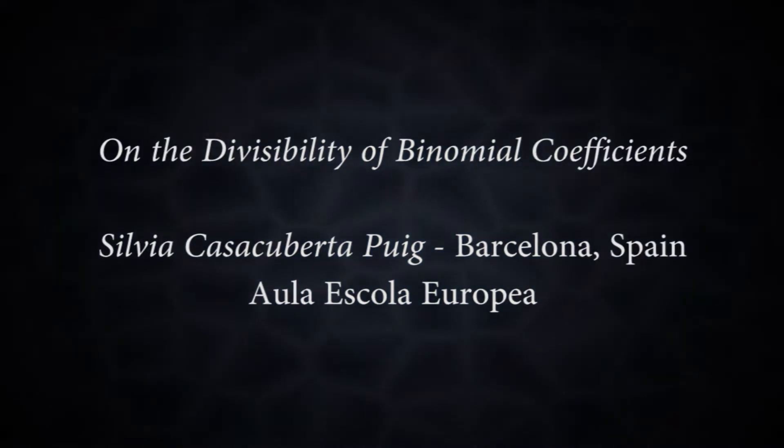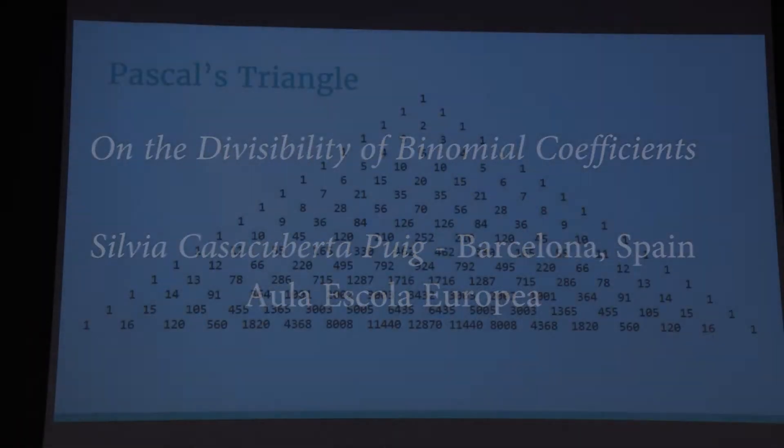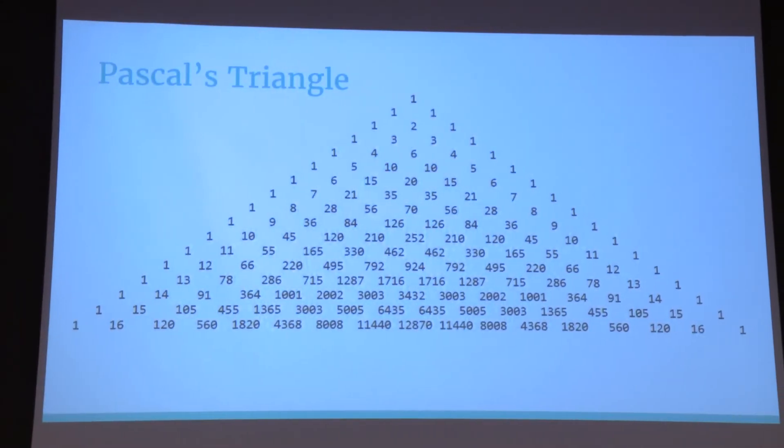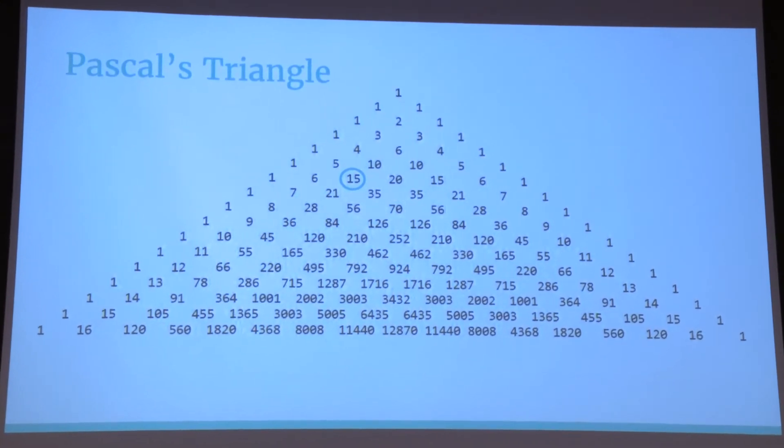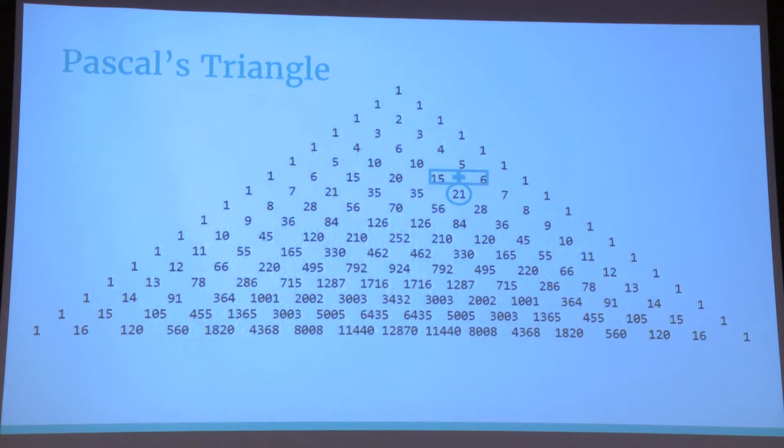First, let's take a look at Pascal's triangle. Pascal's triangle is a triangular array of numbers such that each term is equal to the sum of the previous two terms. For example, 15 is 5 plus 10, or 21 is 15 plus 6.